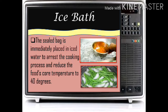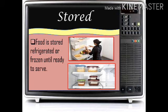Ice bath: the sealed bag is immediately placed in ice water to arrest the cooking process and reduce food cost. The ice bath is a technique to keep ingredients fresh by placing them in ice. Stored: food is stored, refrigerated, or frozen until ready to serve — this is also a technique or method to prevent spoilage of ingredients or cooked food.